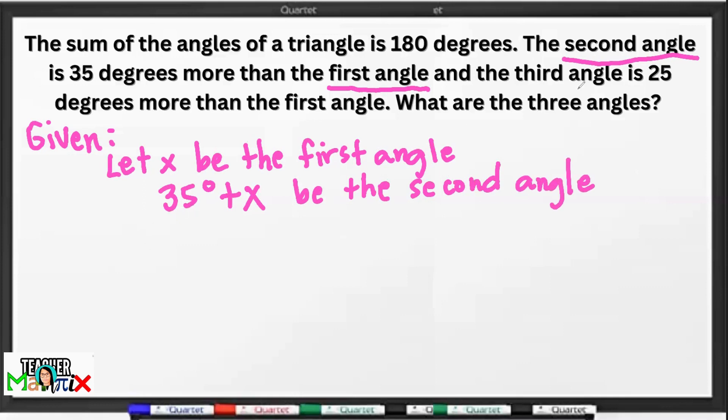Then, itong third angle. 25 degrees more than the first angle. So, 25 degrees plus x be the third angle.